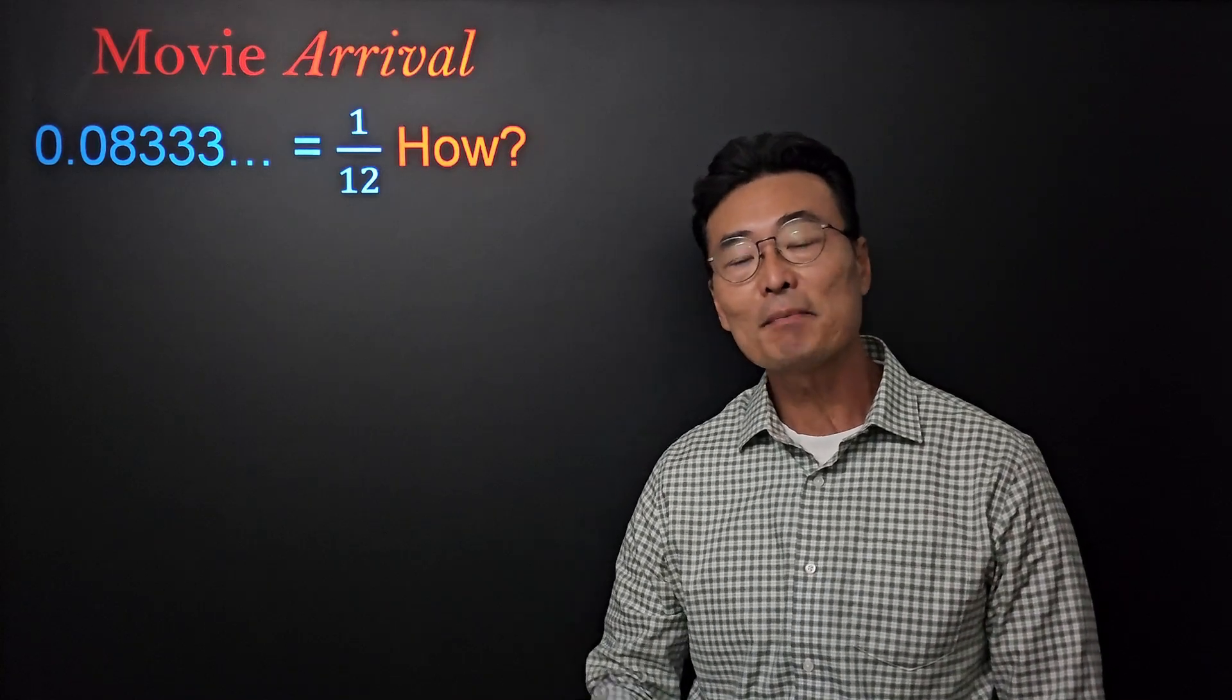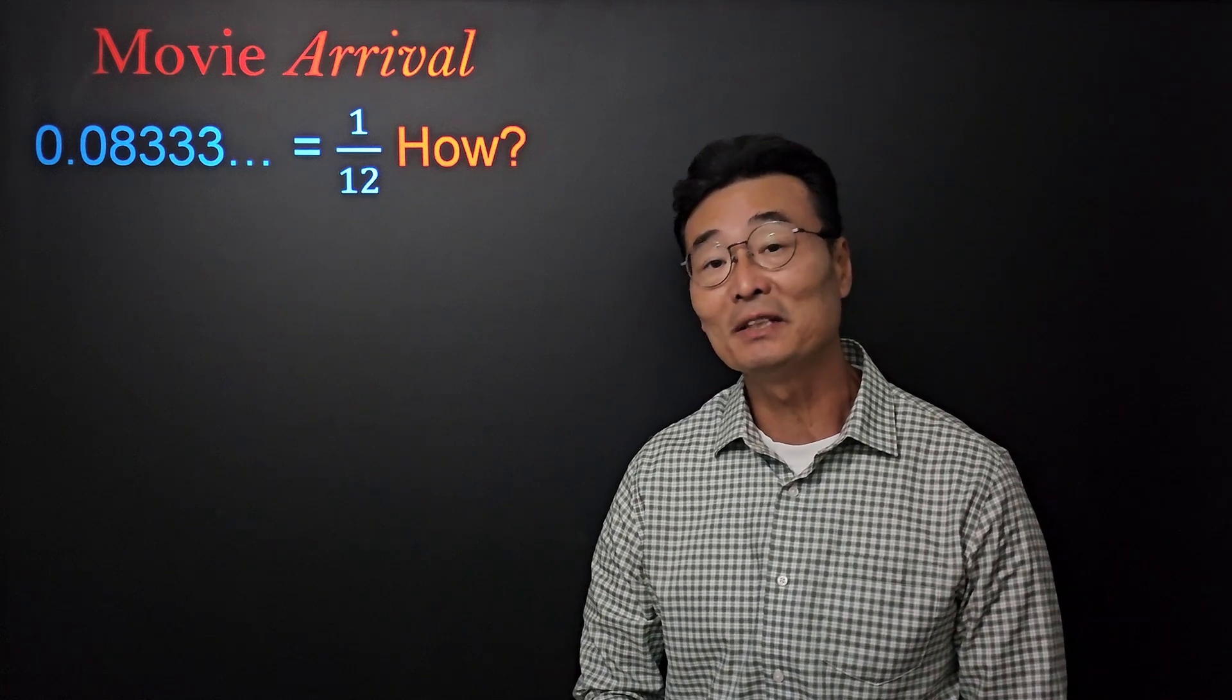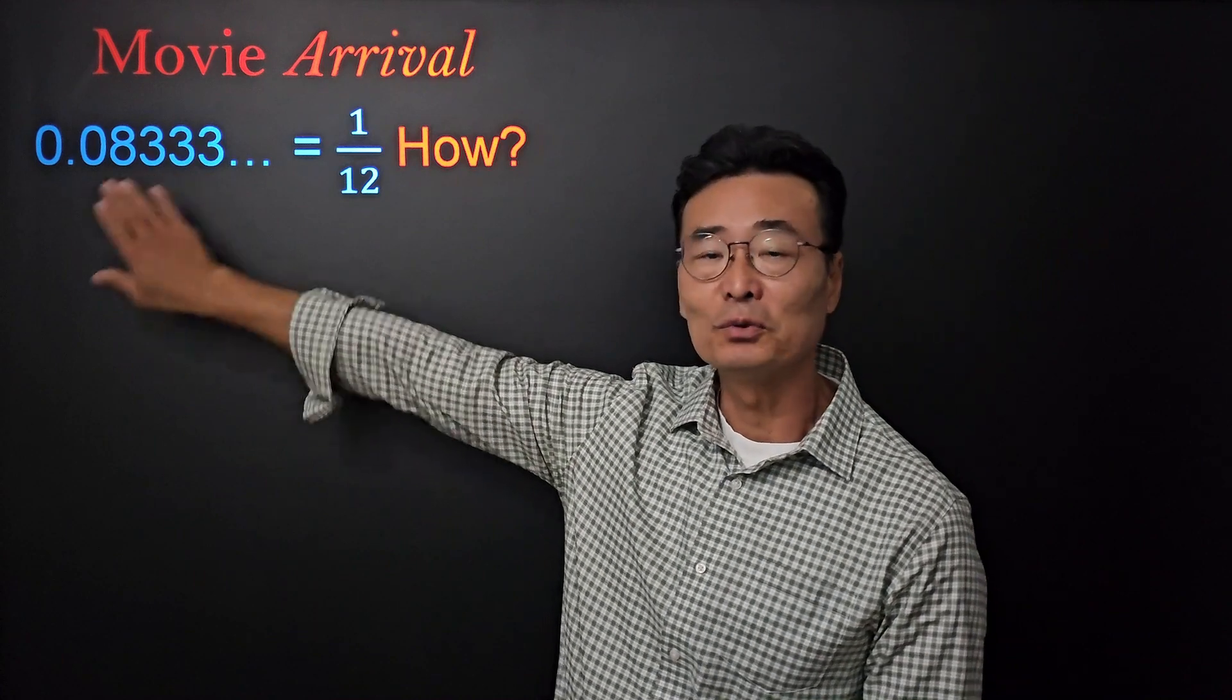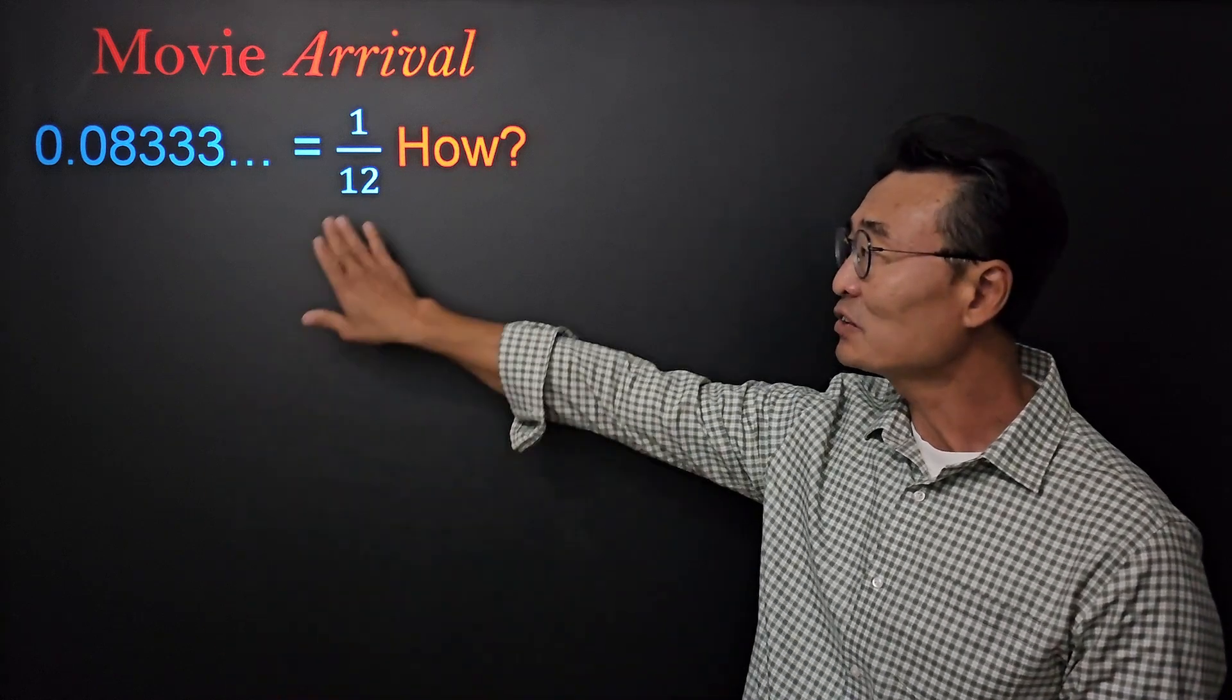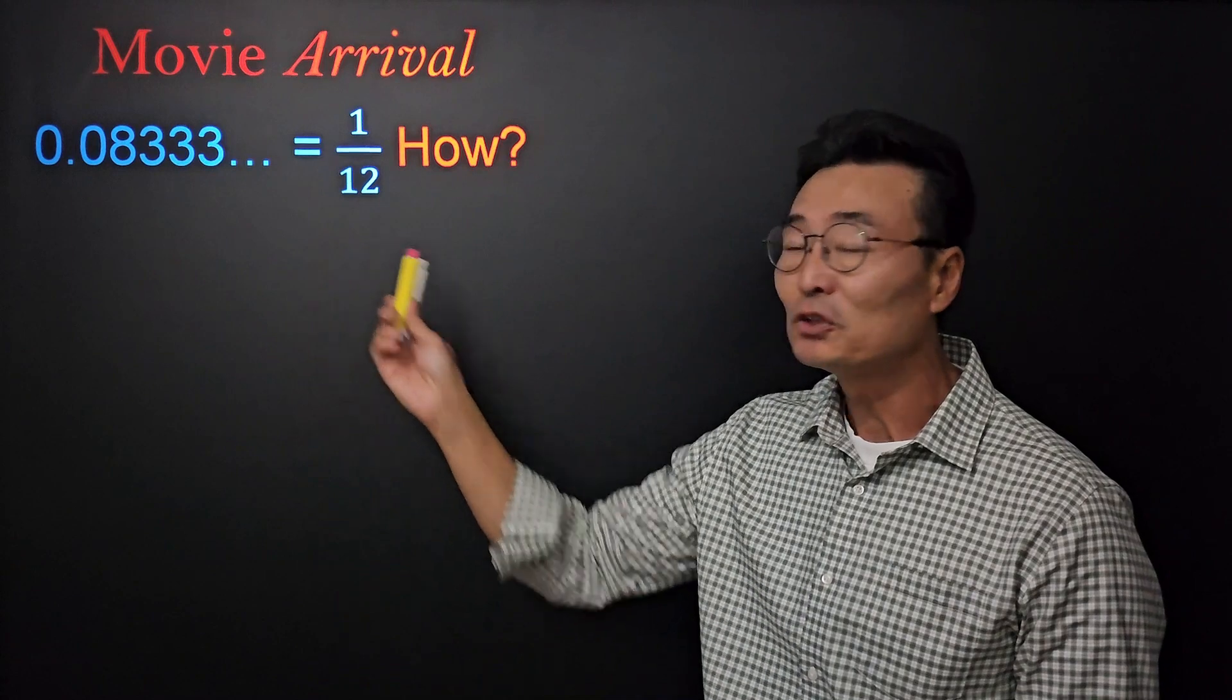There's a movie called Arrival that came out about seven years ago. By the way, it's a very good movie - go watch it if you get a chance. In the movie, one of the scientists mentions the number 0.083 repeating and says that it actually equals the fraction 1 over 12. Let me show you how to change that repeating decimal into a fraction.